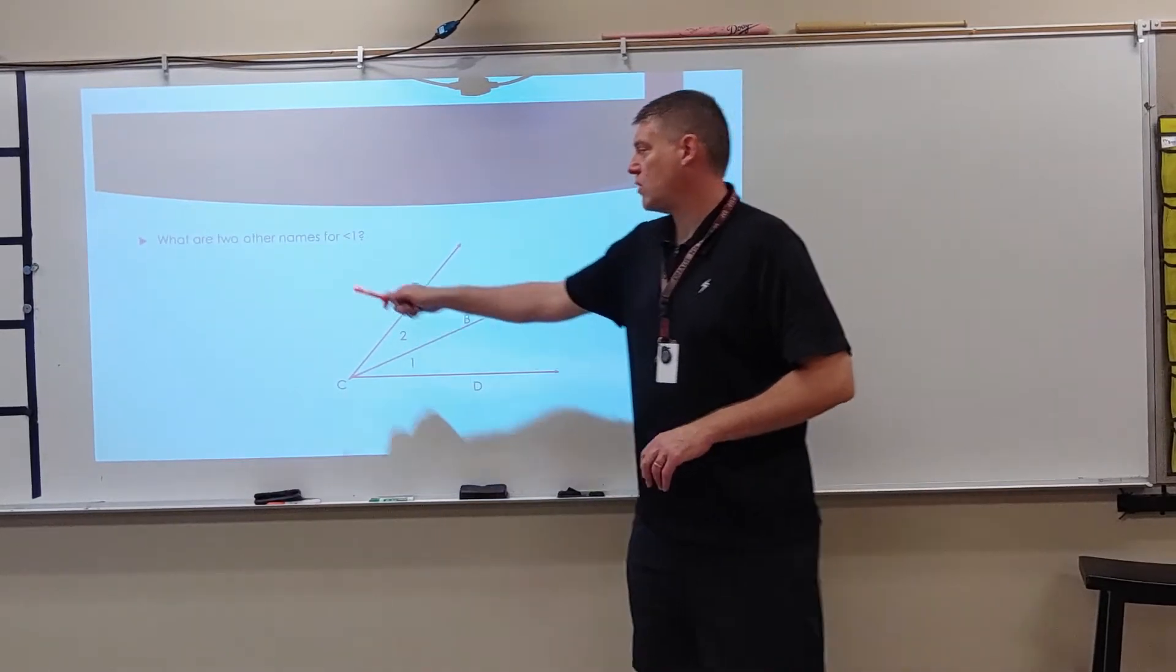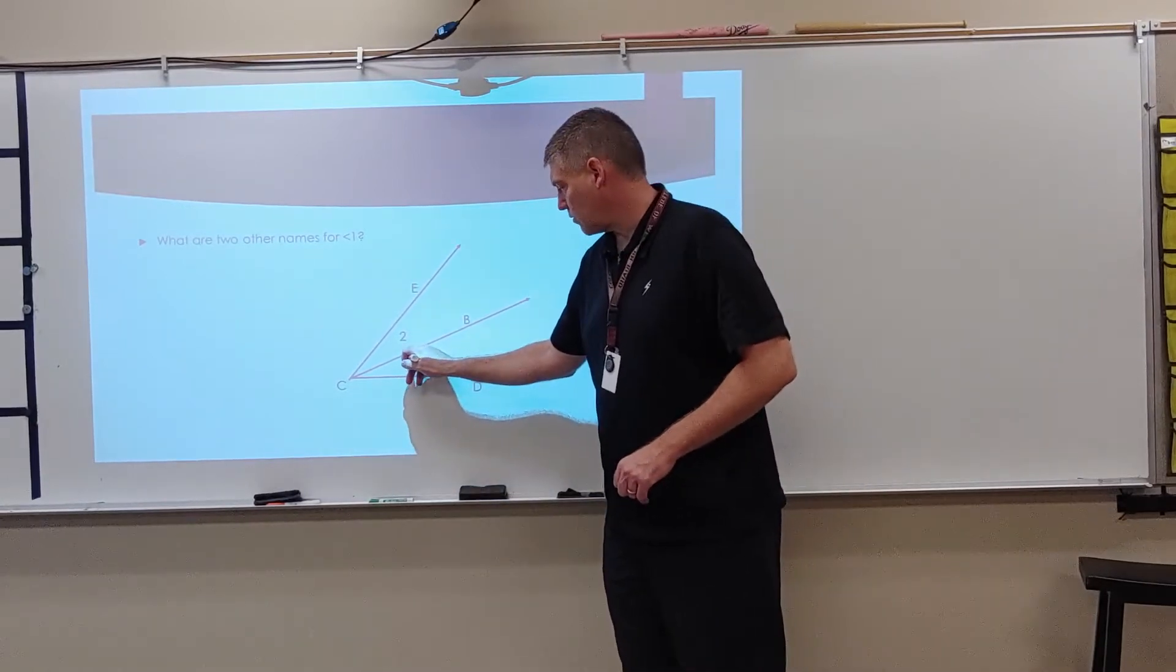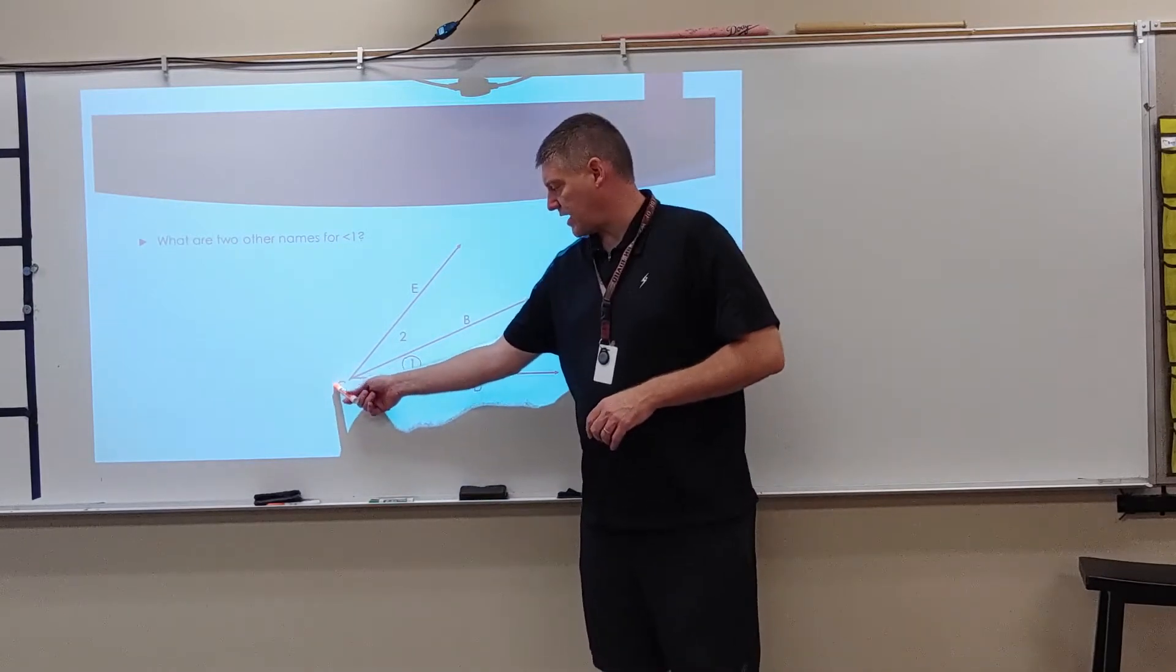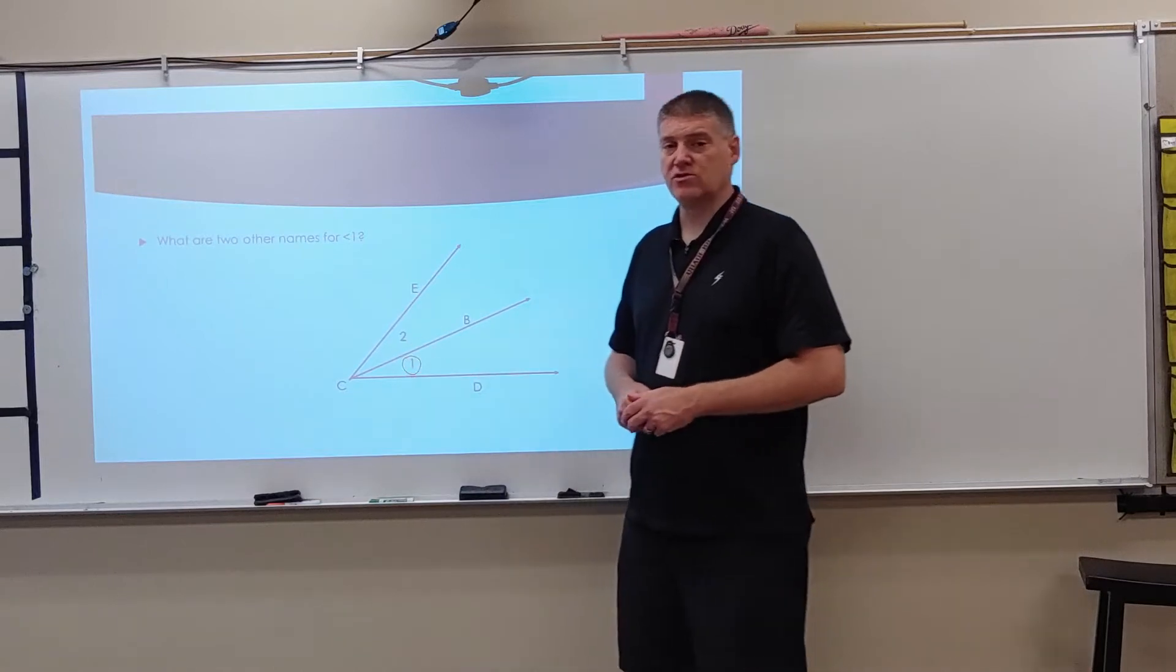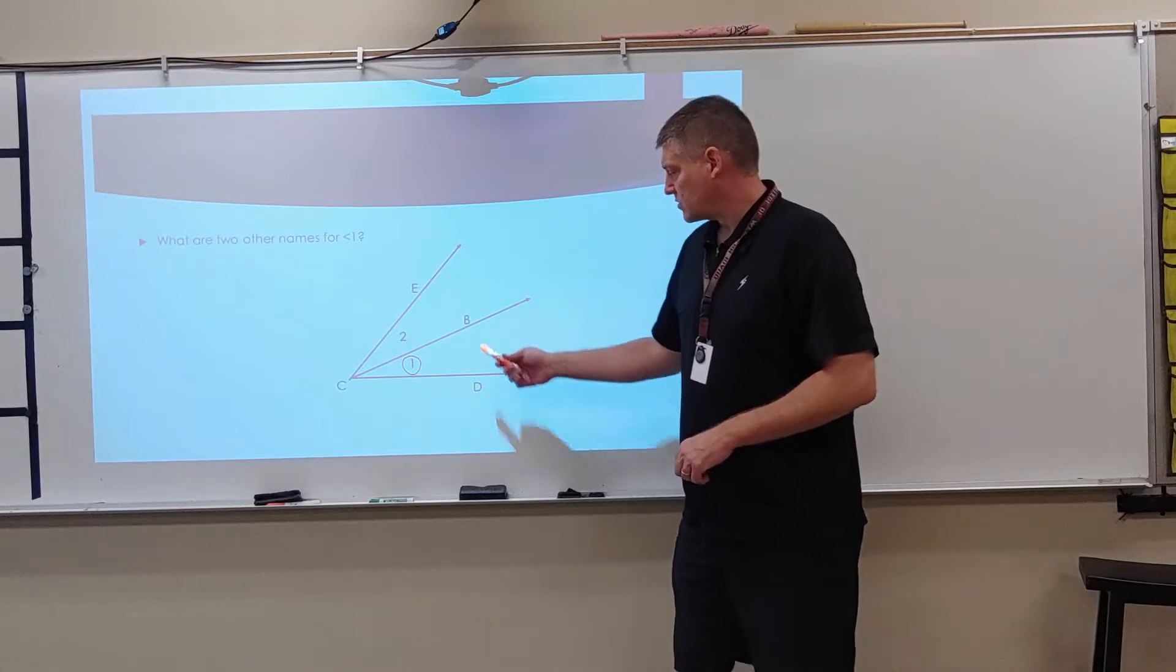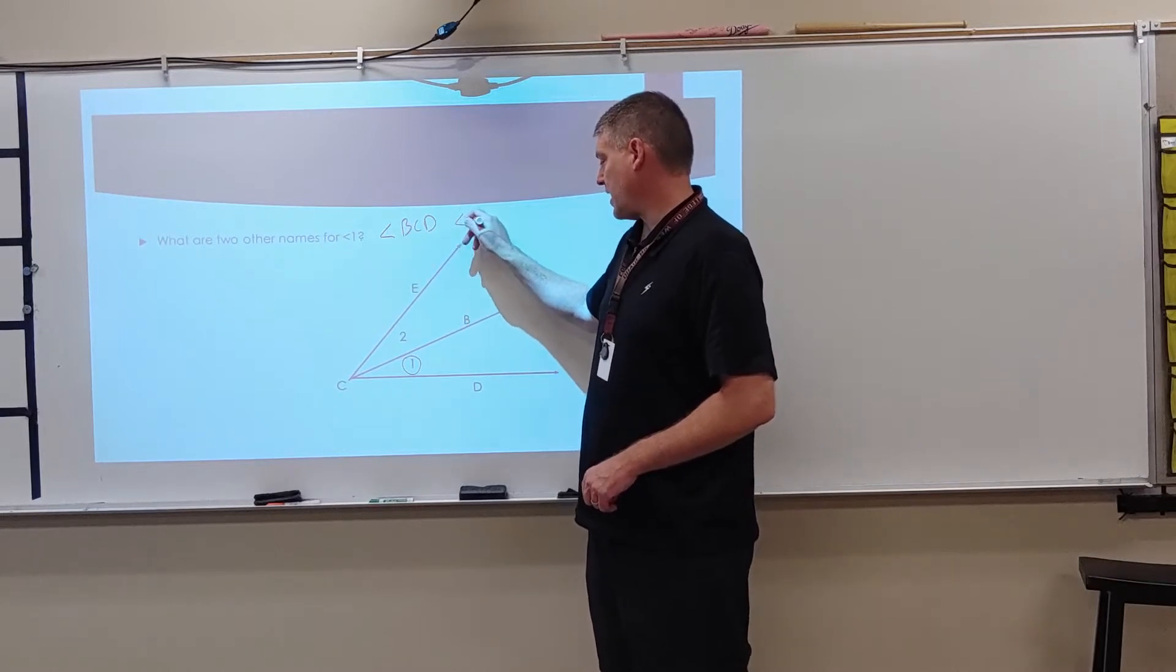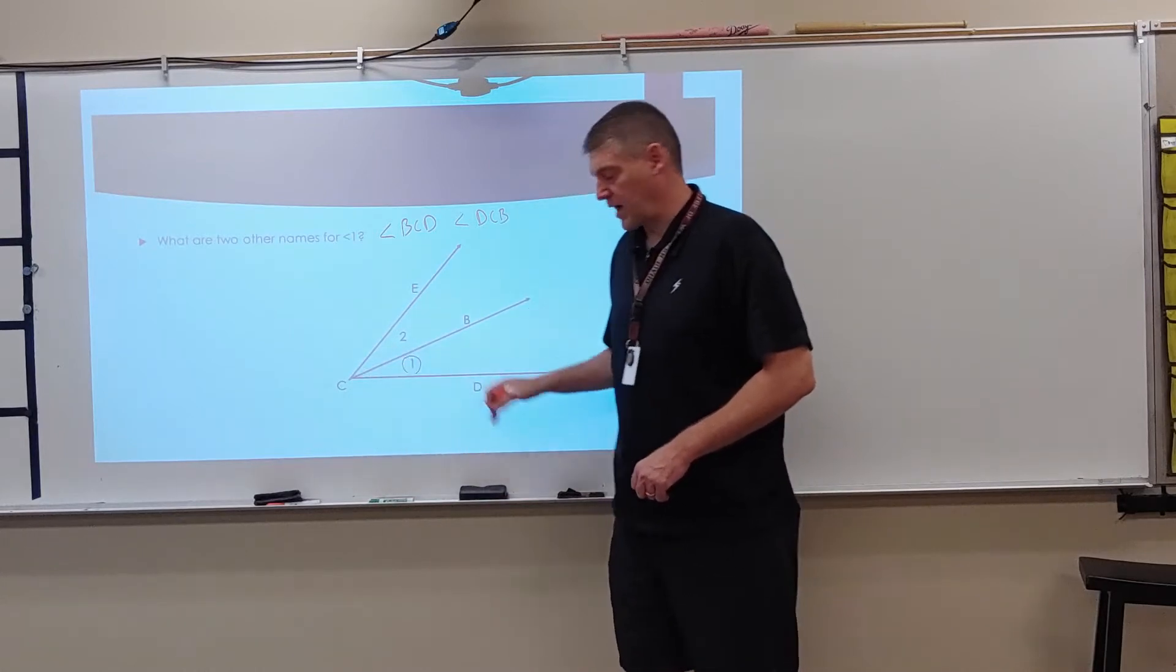So, what are two other names for angle one? Well, we've got to find angle one. So here's angle one right here. So what we're going to do is we're going to name that two other ways. Now, first of all, I noticed that here at C, I have multiple angles coming out from C. So I can't just use the letter C. So I have to name it by a side, vertex, side. So that tells me that this is going to be angle BCD and angle DCB. So I'm coming here and going back.